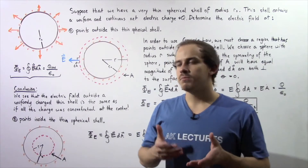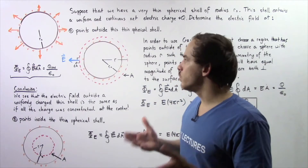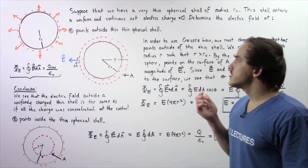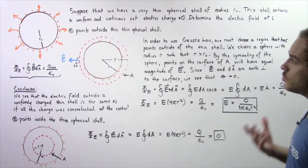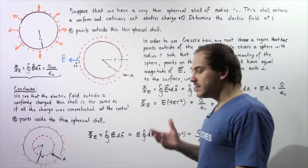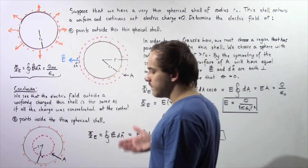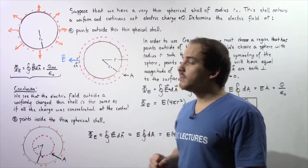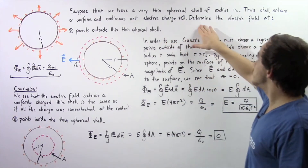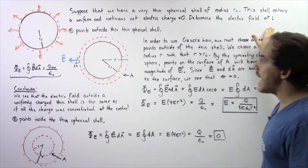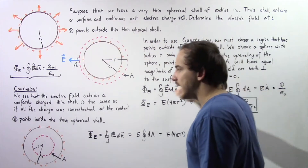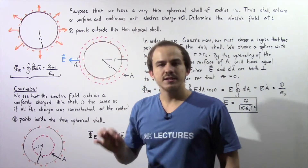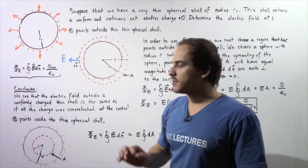Let's look at the following example that will deal with Gauss's law. Suppose we have a very thin spherical shell of radius R₀. This shell contains a uniform and continuous distribution of net electric charge given by positive Q. Determine the electric field at points outside this thin spherical shell and at points inside this thin spherical shell.